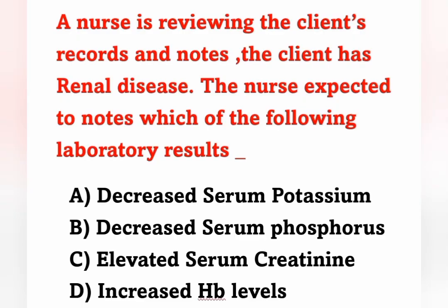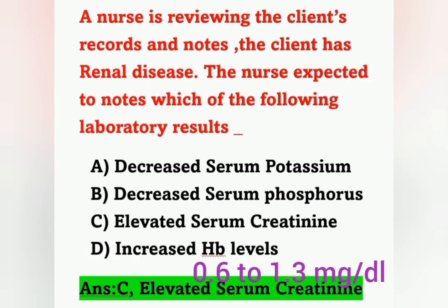Next question: A nurse is reviewing a client's records and notes the patient has renal disease. The nurse expected to note which of the following laboratory results? Options: A) Decreased serum potassium, B) Decreased serum phosphorus, C) Elevated serum creatinine, D) Increased hemoglobin level. In renal disease, we find elevated RFT values — renal function test includes serum creatinine, blood urea nitrogen, urea, and uric acid. Elevated serum creatinine is found in renal disease.